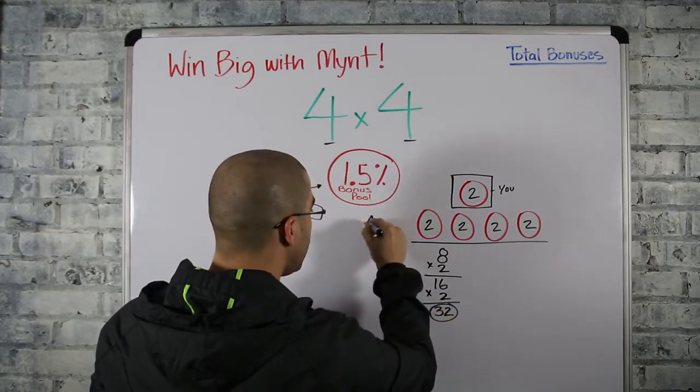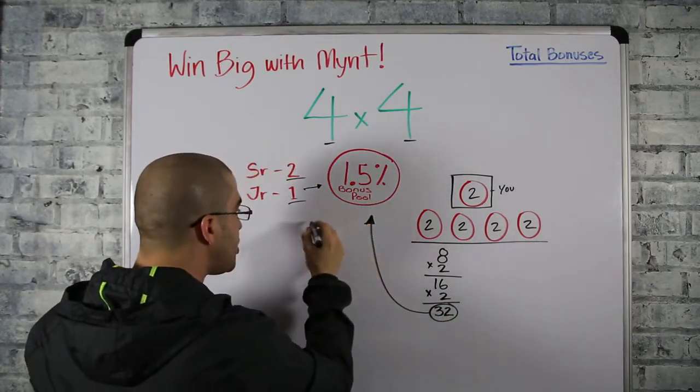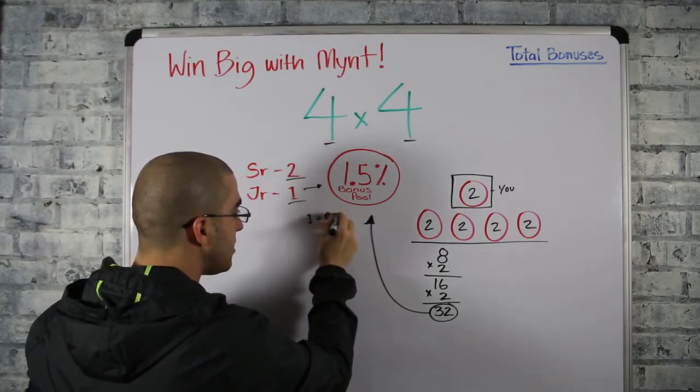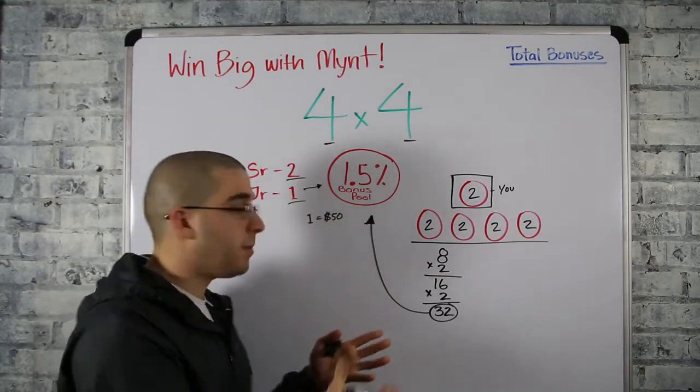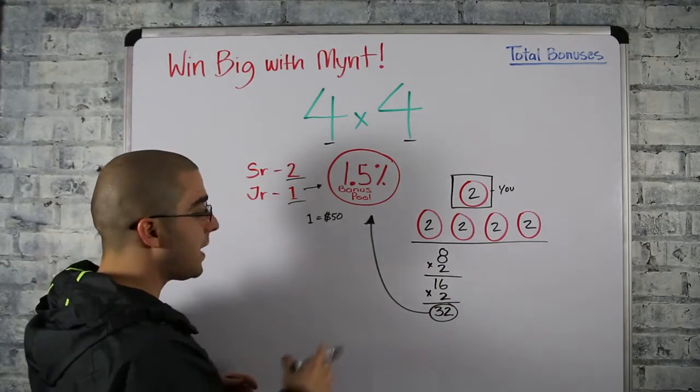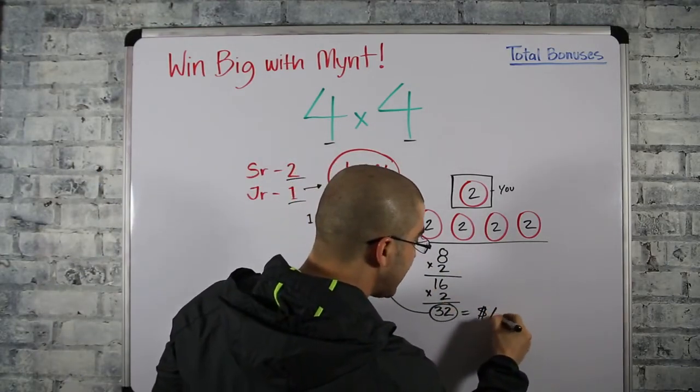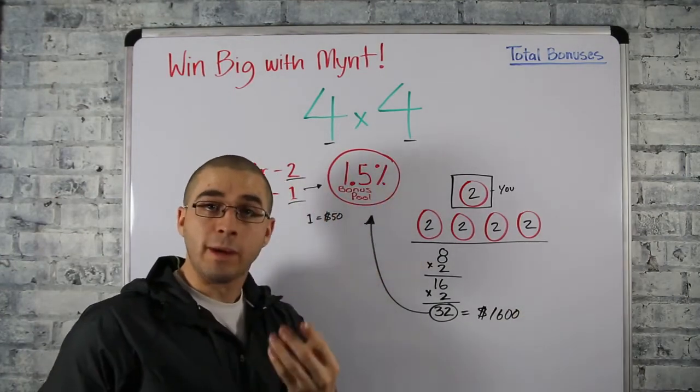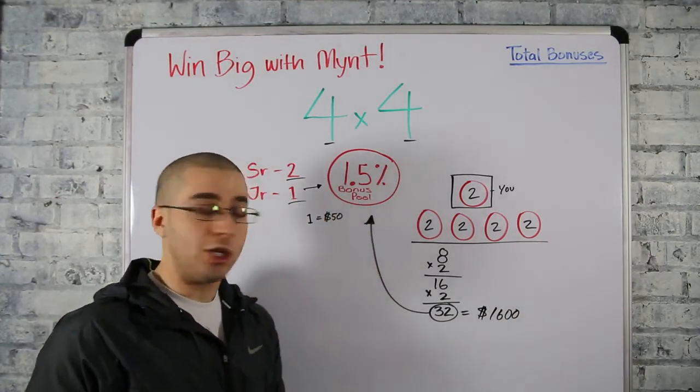And now you have 32 shares into our bonus pool and each share is worth approximately fifty dollars. And this fluctuates week to week based on the volume of the company. So now you're looking at 32 equals sixteen hundred dollars. Your first four weeks you helped four people get started, you made sixteen hundred dollars.